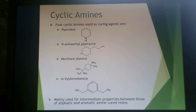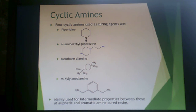Cyclic amines can also be used as curing agents: piperidine, aminoethylpiperazine, menthanediamine, and m-xylenediamine. These are mainly used for intermediate properties between aliphatic and aromatic amine curing agents.